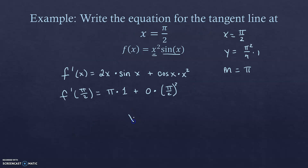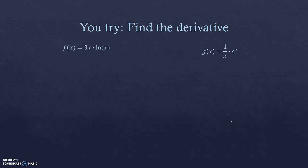The equation for the tangent line is y = π(x − π/2) + π²/4. You don't need to simplify further, but you can. Pause the video to try the practice problems before the answers are displayed.